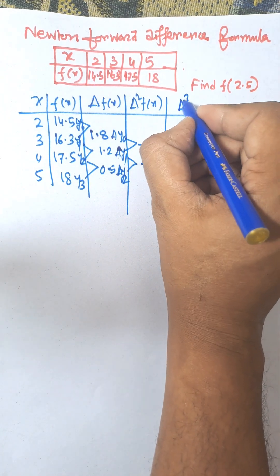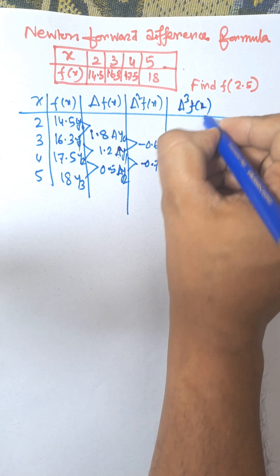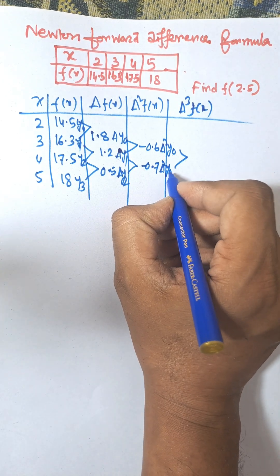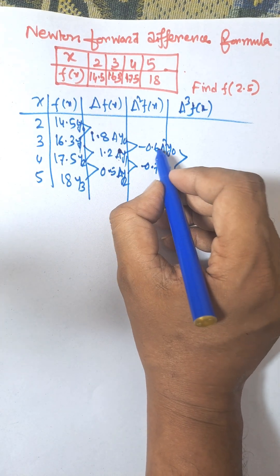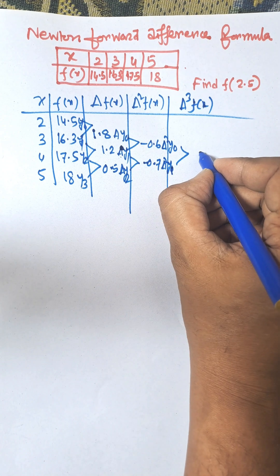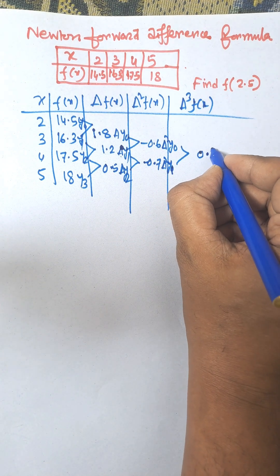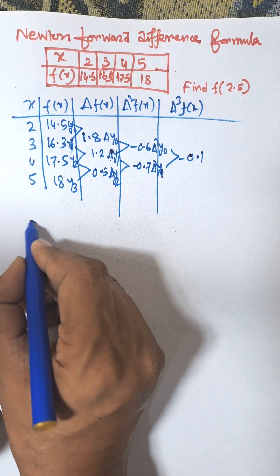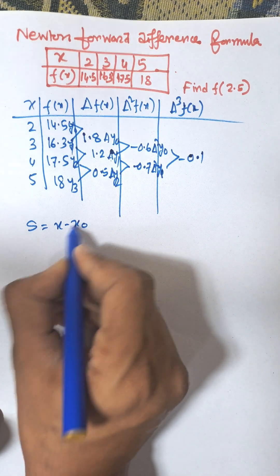And finally, we need to find del cube f(x), that is the third order difference: del square y₁ minus del square y₀, which equals minus 0.1.